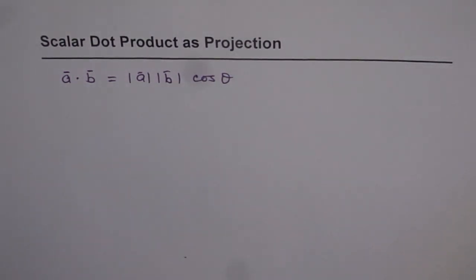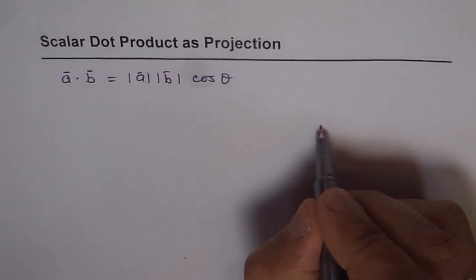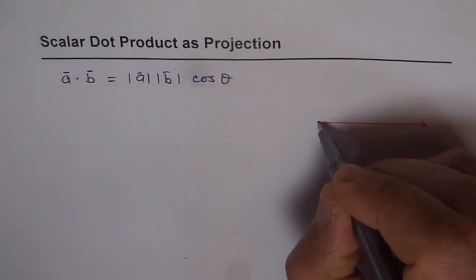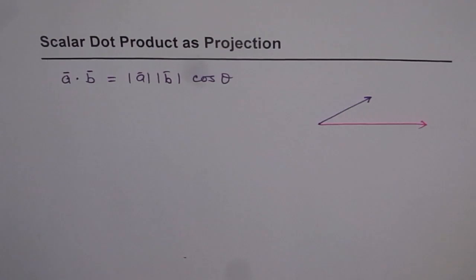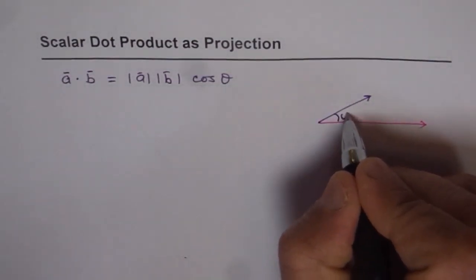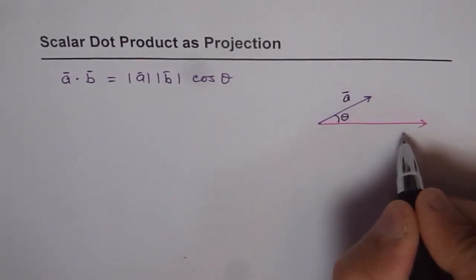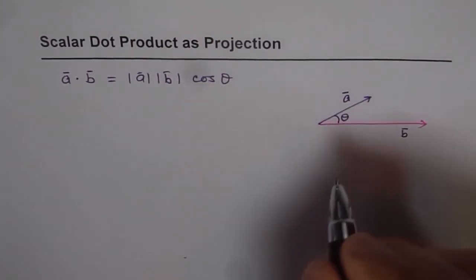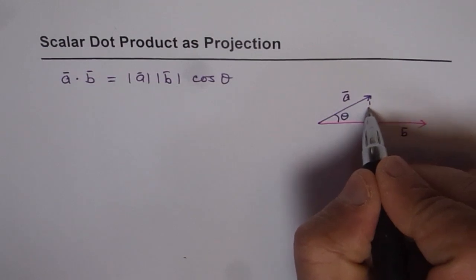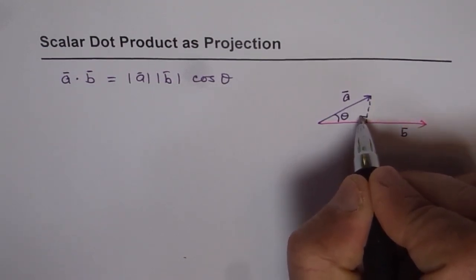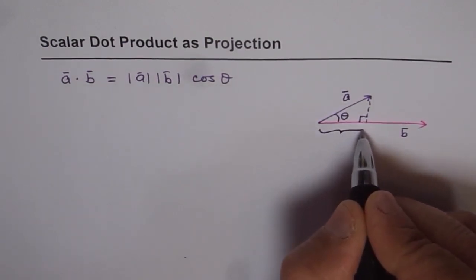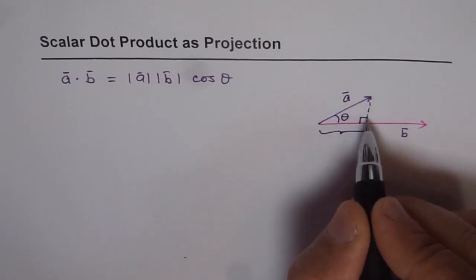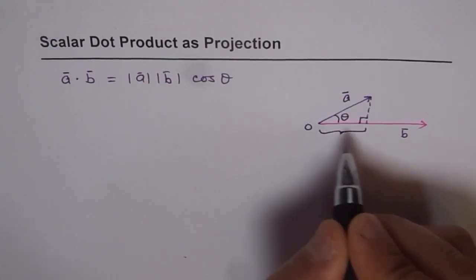Now let's see how we can geometrically interpret it. Let's say this is our vector B and we have a vector A here. The angle between the two vectors is theta. So we have vector A here and vector B here. Let's show what is the projection of vector A on B — projection is like this. So this is the projection of vector A on B. This forms a right triangle, and A is the hypotenuse. This becomes the adjacent side. Let's say this is O and this part is N.